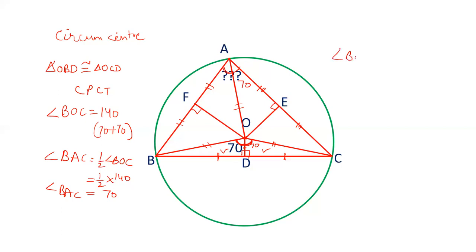So, we have found the value of angle BAC is 70 degrees. Now, let's solve this question by another approach.